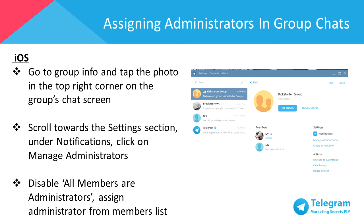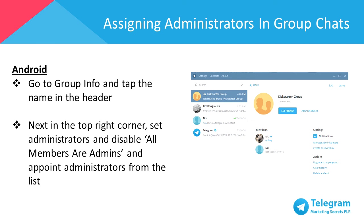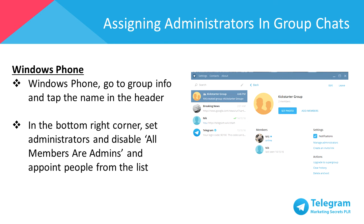To assign administrators for iOS, go to group info and tap the photo in the top right corner on the group's chat screen. Scroll to the settings section under notifications and click on 'Manage Administrators.' Disable 'All Members Are Administrators' and assign a specific administrator from the members list. For Android, go to group info, tap the name in the header, then in the top right corner set administrators and appoint them from the list. For Windows Phone, go to group info, tap the name in the header, then in the bottom right corner set administrators and appoint people from the list.